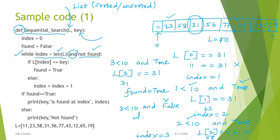It goes to the next part: if found equals true — yes, found is true, the condition is satisfied — it prints: key 31 is found at index 3. Suppose the while loop runs all the way to index 9 and the key is not found, then found remains false and it will print the else part.